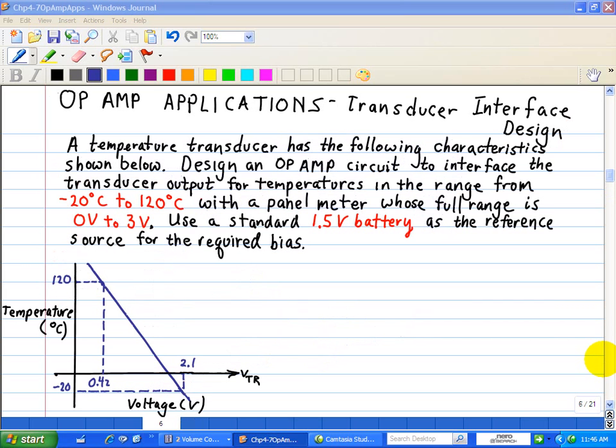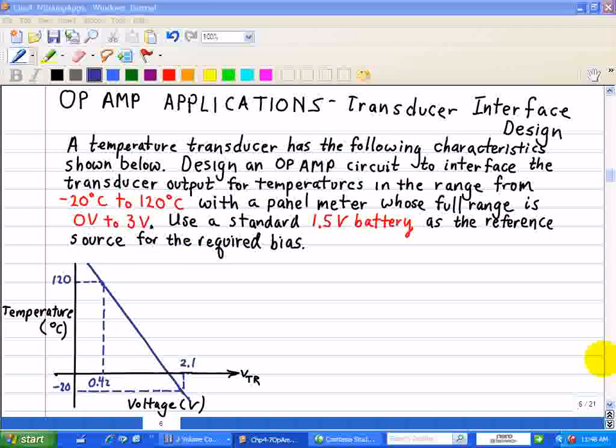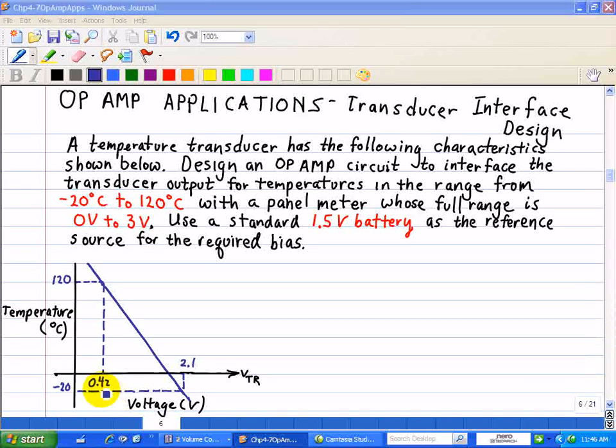Here we're given a temperature transducer which has the following characteristic shown here, in which we want to design an op-amp circuit to interface the transducer output for temperatures in the range from 20 degrees, negative 20 degrees, to 120 degrees centigrade.